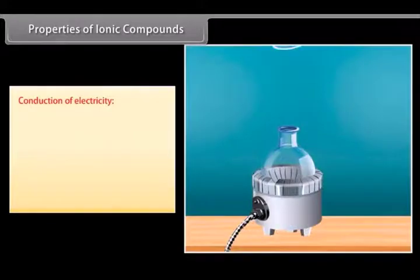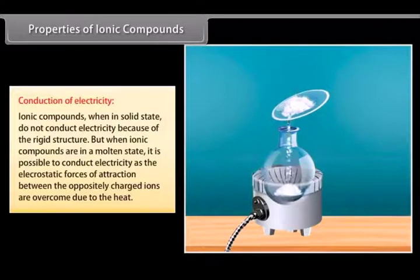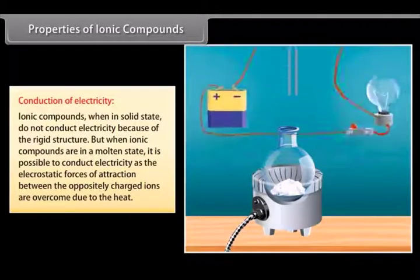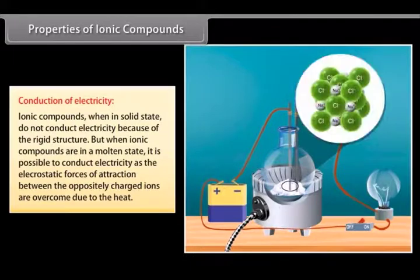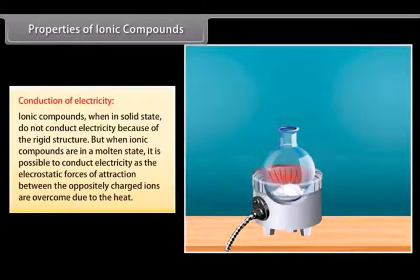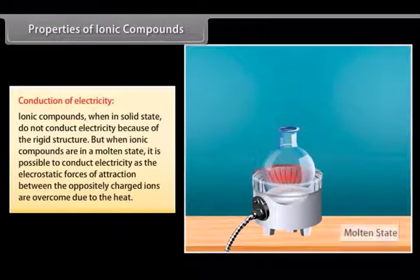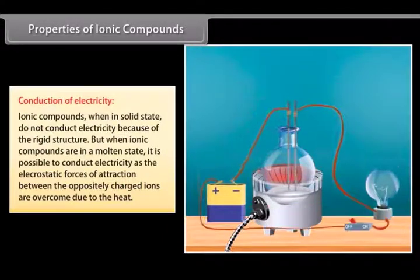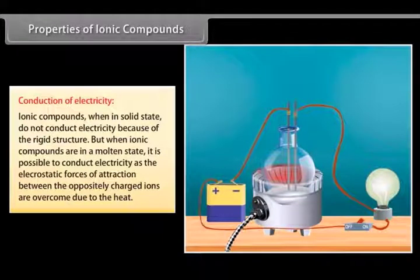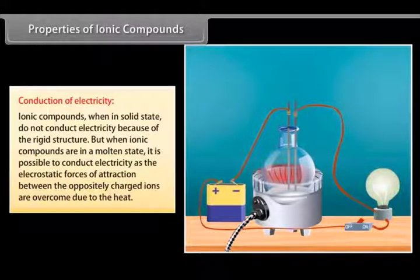Conduction of electricity. Ionic compounds, when in solid state, do not conduct electricity as the movement of ions is not possible because of the rigid structure. But when ionic compounds are in a molten state, it is possible to conduct electricity as the electrostatic forces of attraction between the oppositely charged ions are overcome due to the heat. This leads to ions to move freely and conduct electricity.